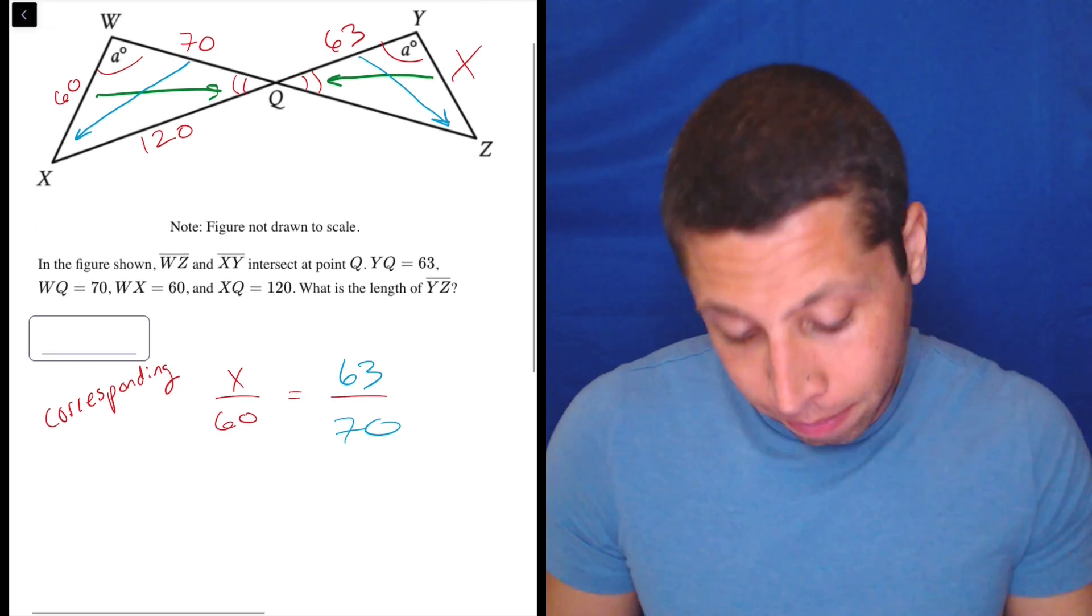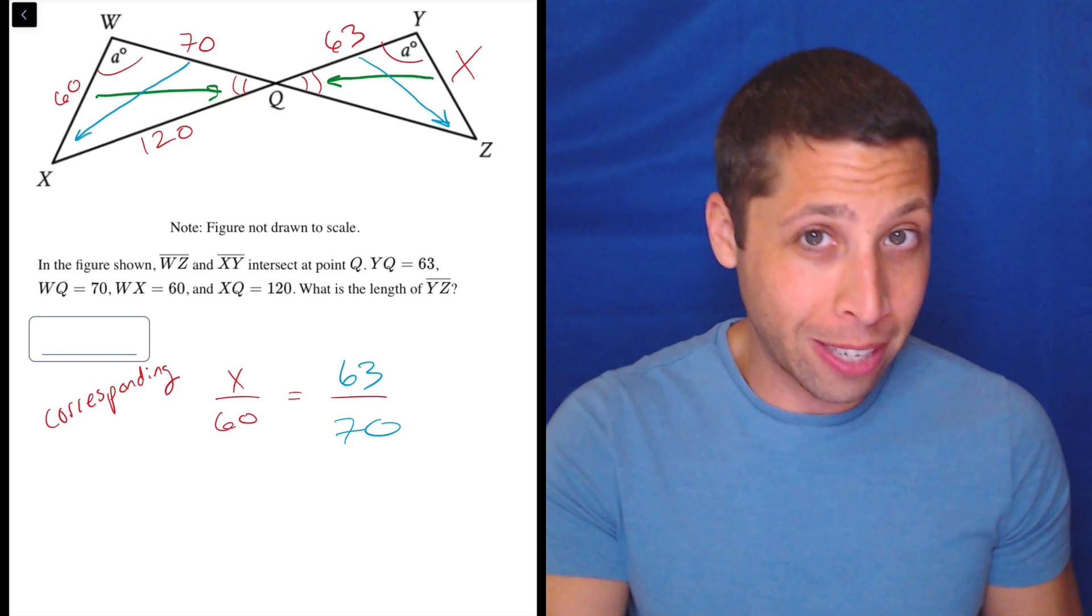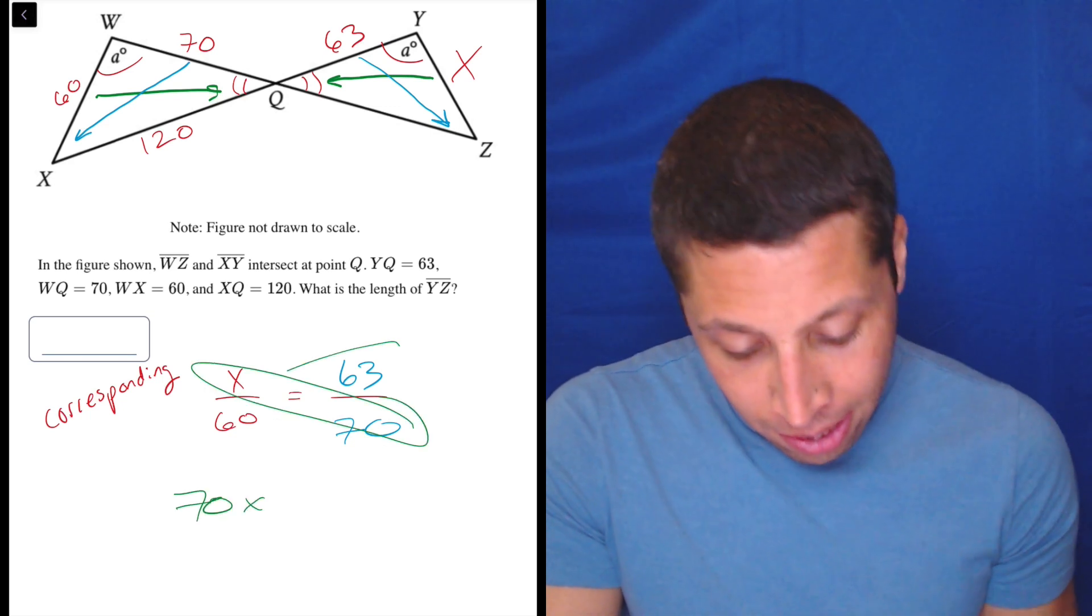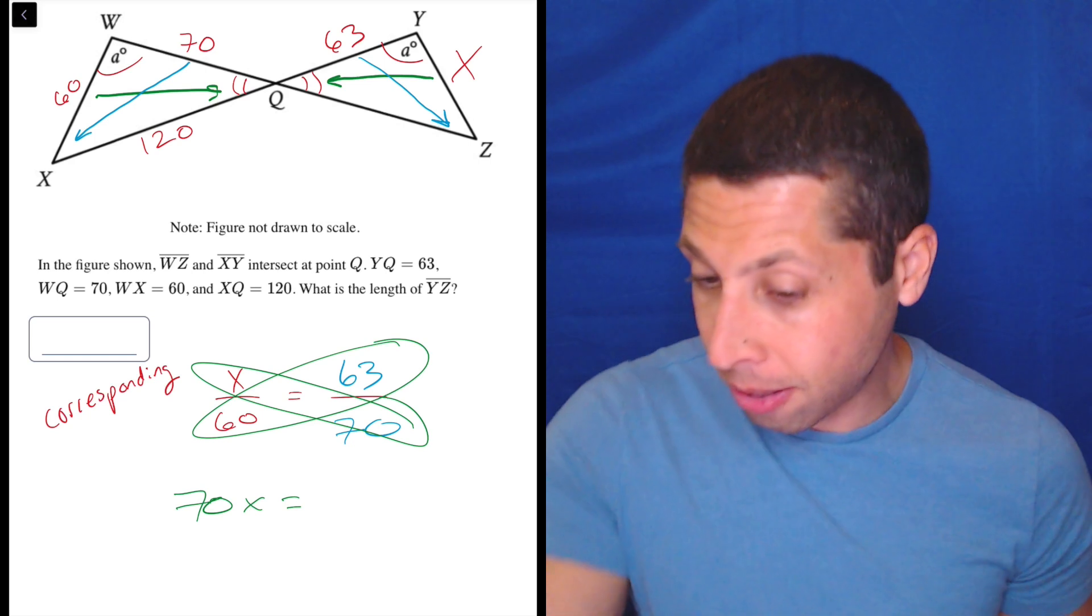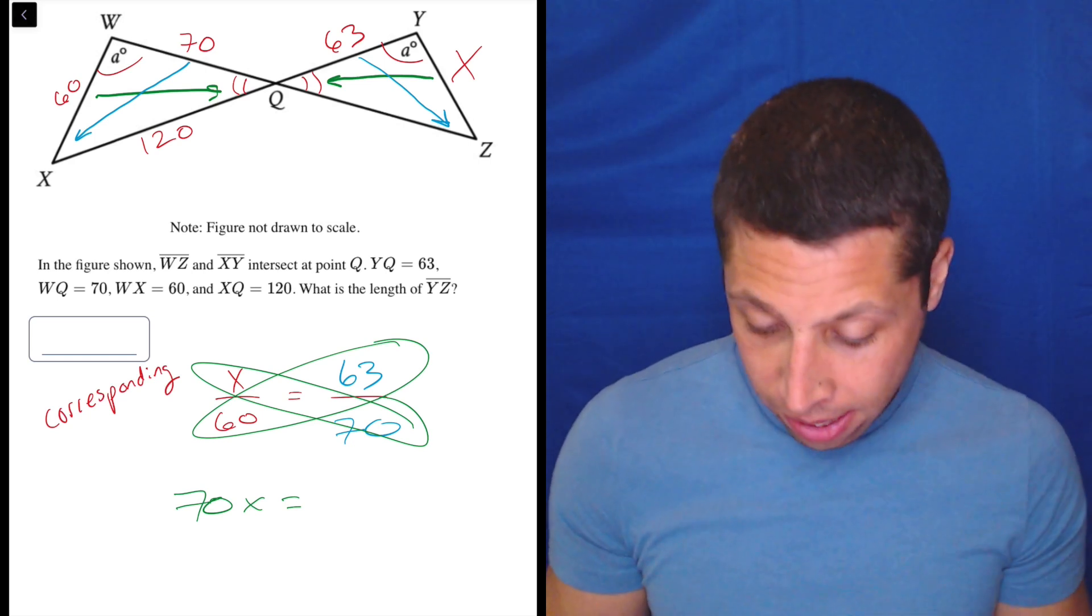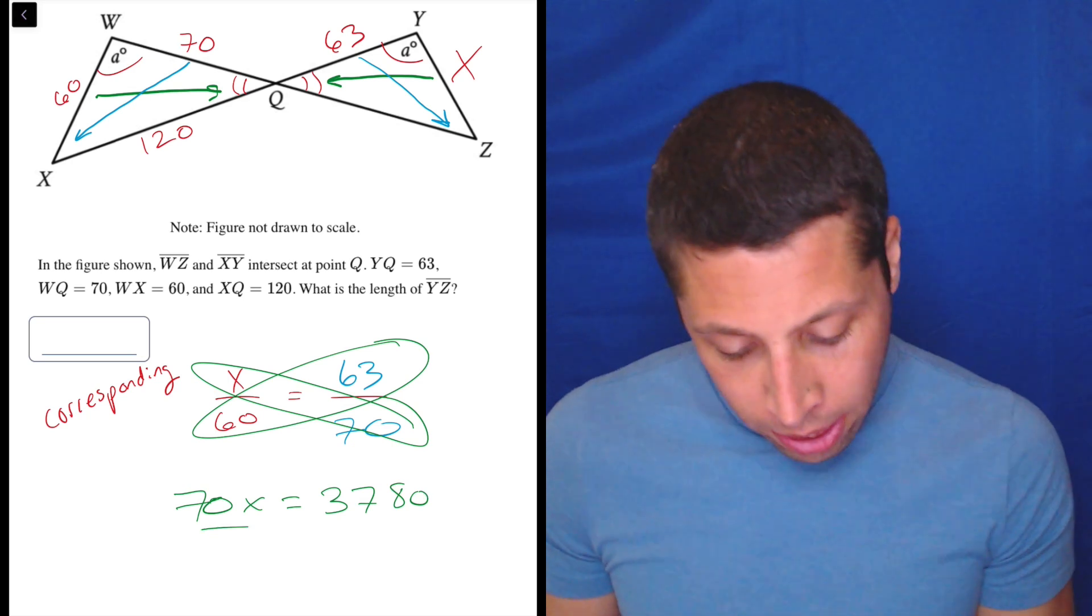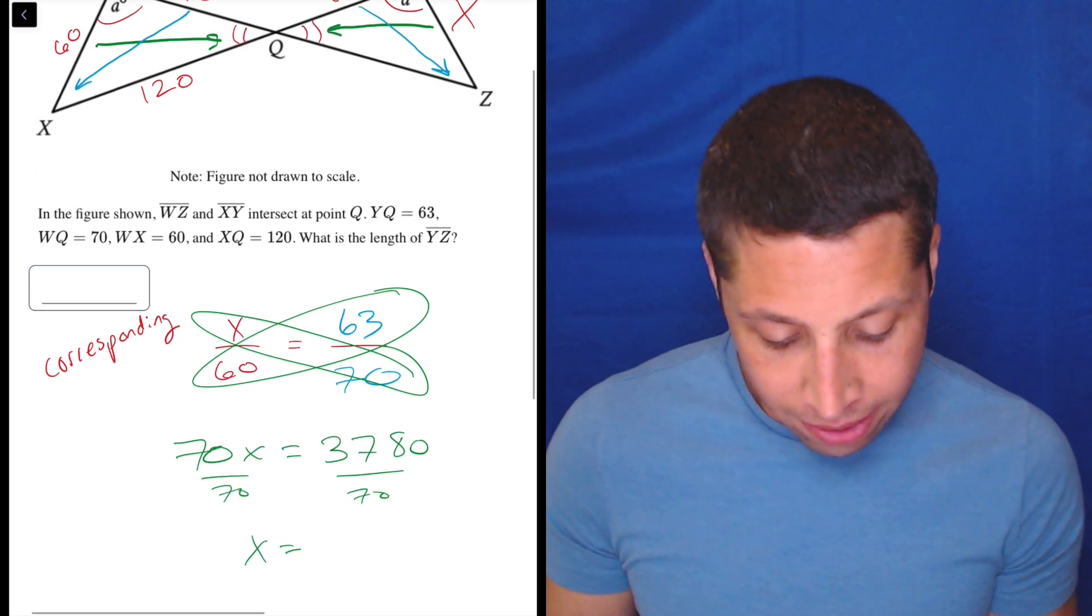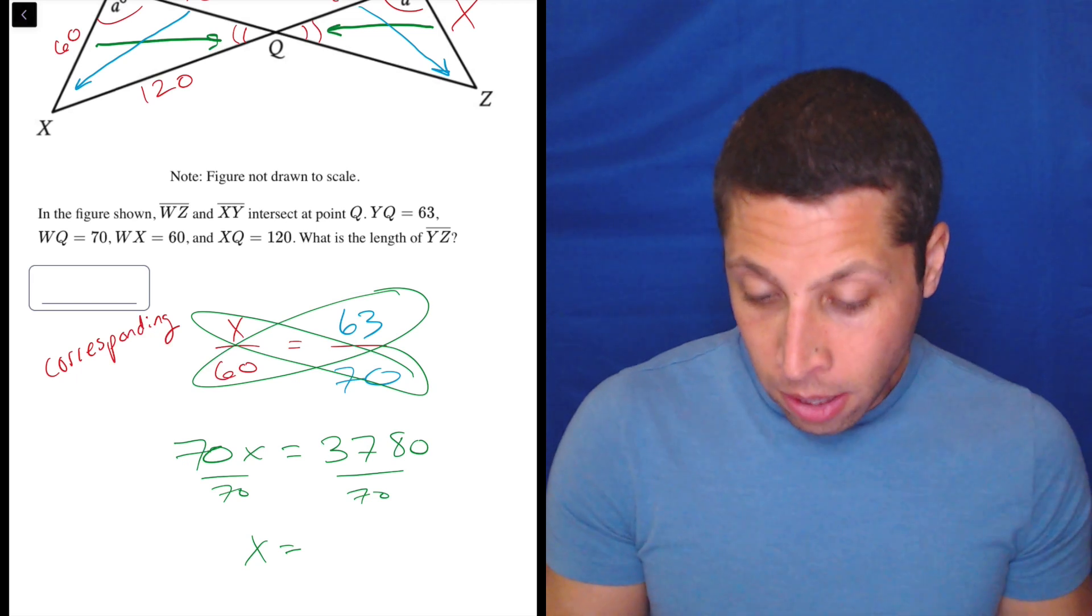Lots of ways you can do it, but if we're doing it the way we probably learned in elementary school, we would do X times 70 is 70X. 63 times 60 is, I don't know, let's figure it out. 63 times 60 is 3780 and then divide by 70 to get X alone. And X is going to be 54.